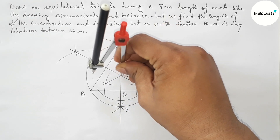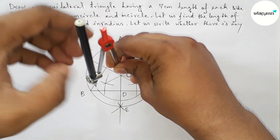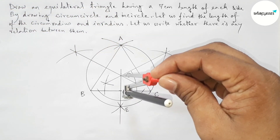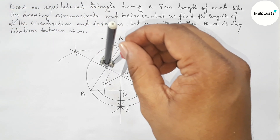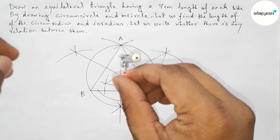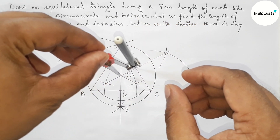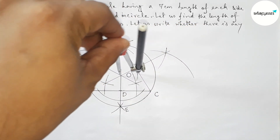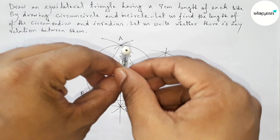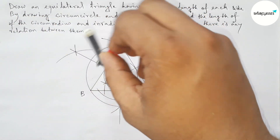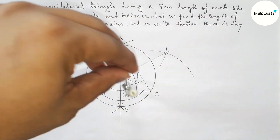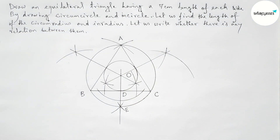Taking point D and point E. Taking the length OD with the help of a compass. Now drawing the incircle to this triangle — this is a perfect incircle.